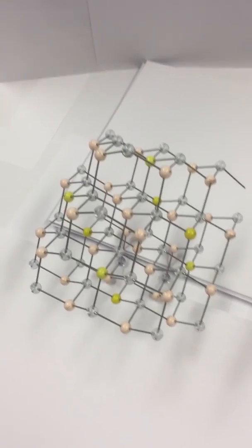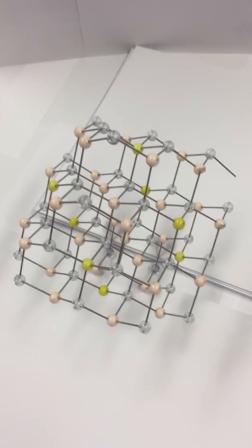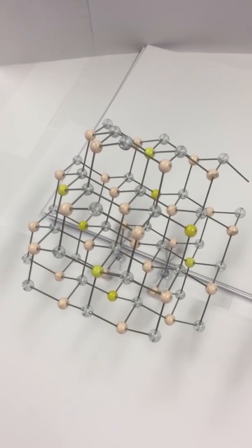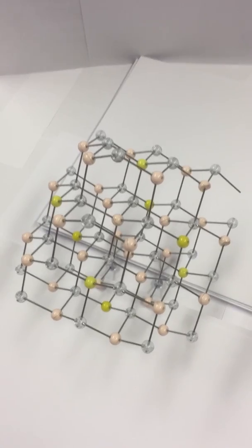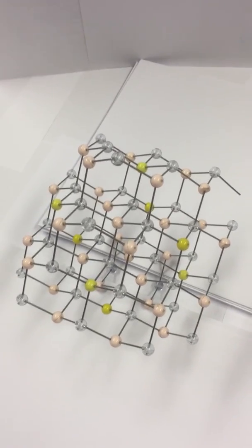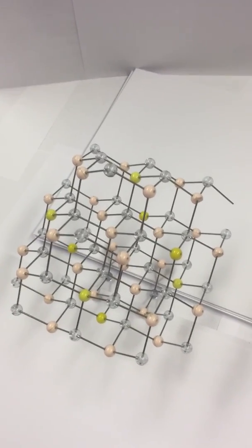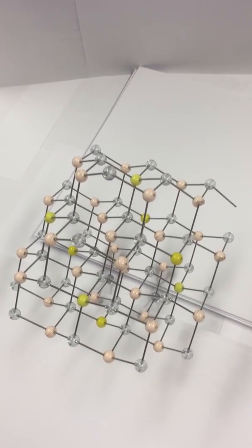So this is a ball and stick model of the gallium arsenide crystal structure. In this we've got one of the colored plastic beads, let's say pink, representing gallium, and the other blue representing arsenic.